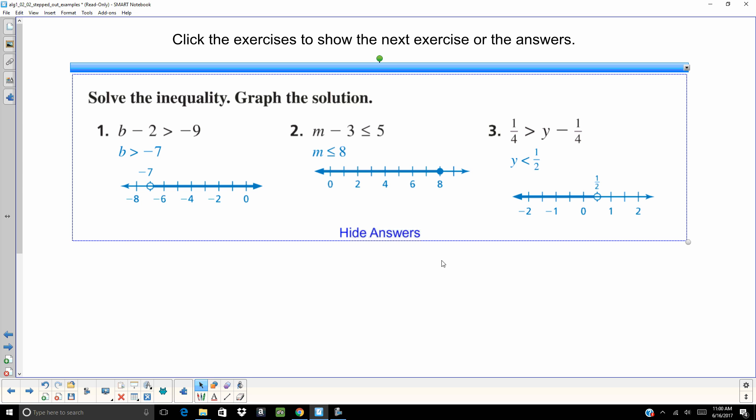So on number one, open dot at negative seven shaded to the right. Number two, closed dot at eight shaded to the left. Number three, you're gonna add one-fourth to both sides, and remember two-fourths when you reduce it is one half, so an open dot at one half shaded to the left.